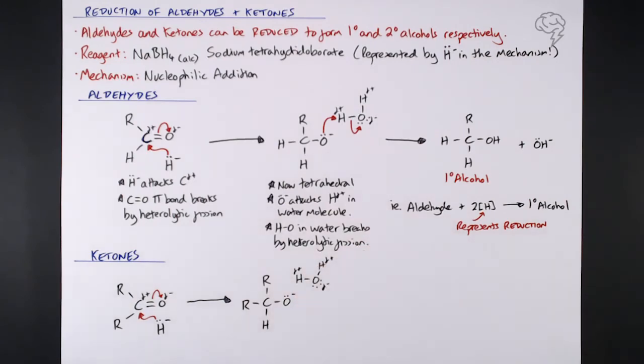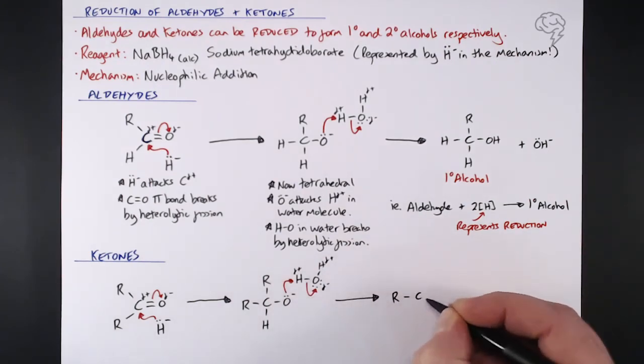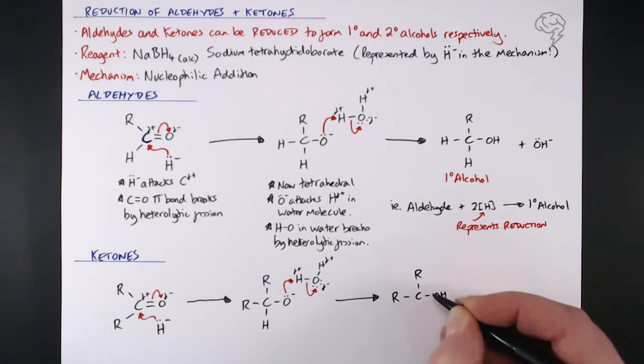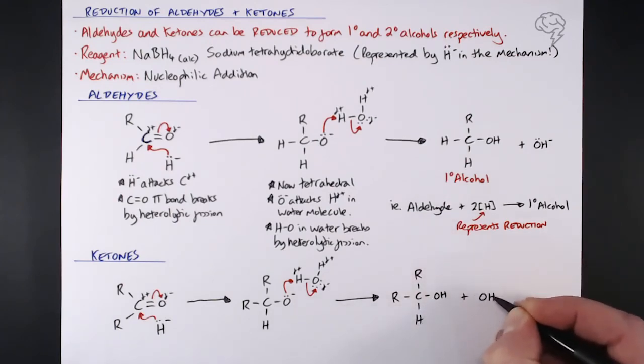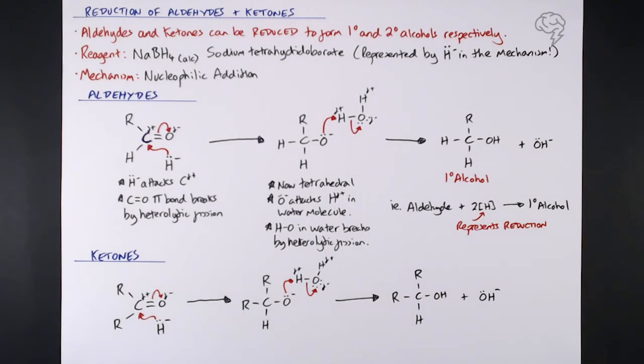In our intermediate, water comes along, donates that H plus to complete the alcohol group, the OH, and we end up with our secondary alcohol. Why is it a secondary alcohol? Because there's one hydrogen attached to the carbon where the OH is. We have gone from a ketone - it is in the middle of a carbon chain - and we end up with our OH minus present as well.